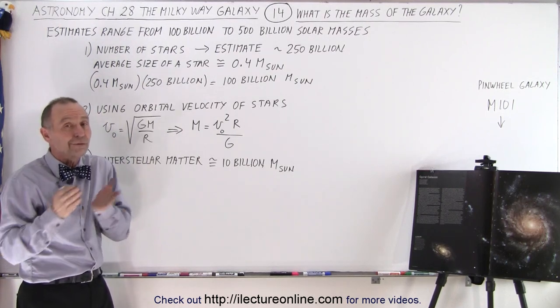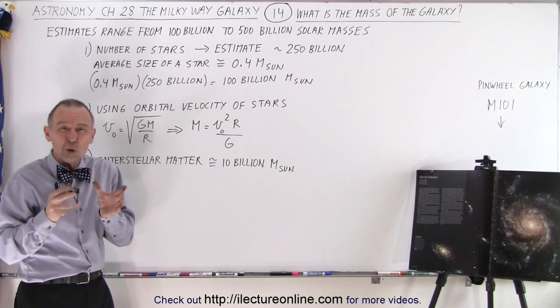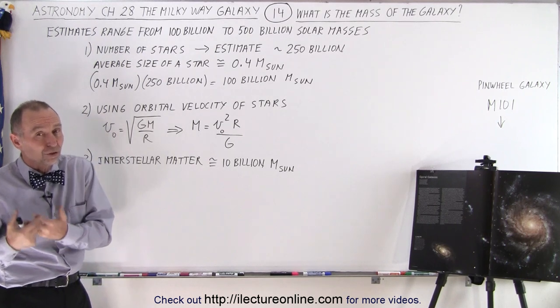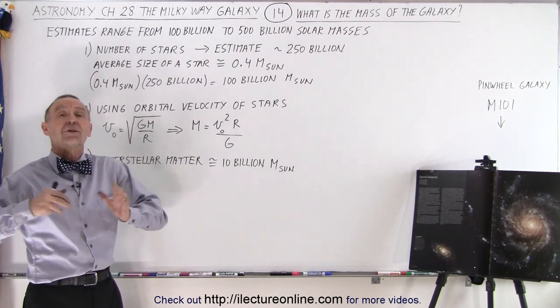But then, as you saw in earlier videos, we really don't know exactly what the structure of our galaxy looks like. And that estimate of 250 billion stars may not be that good of an estimate.